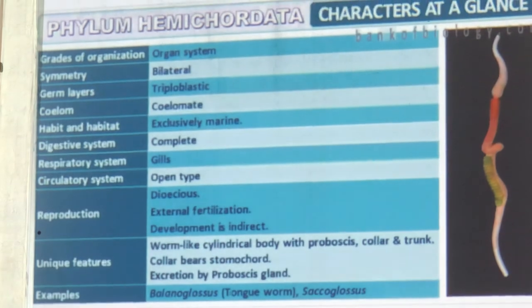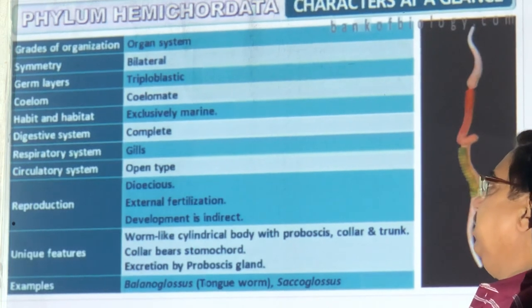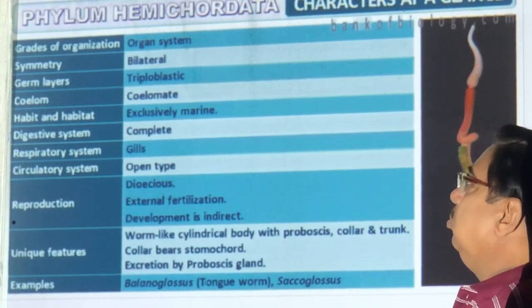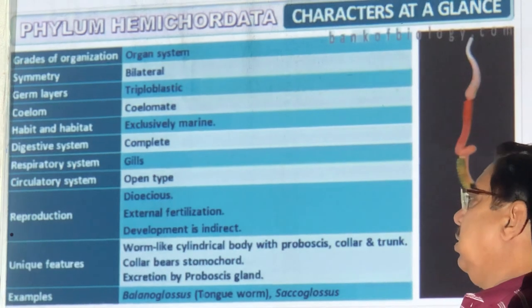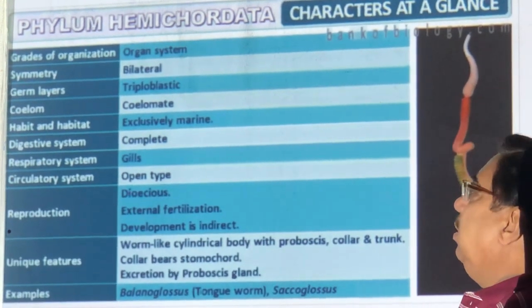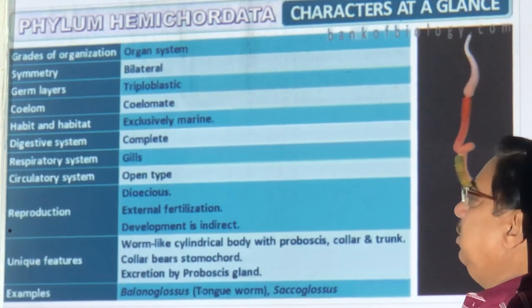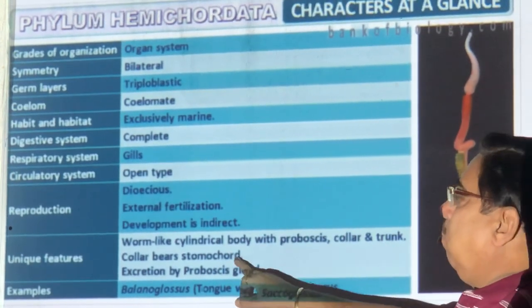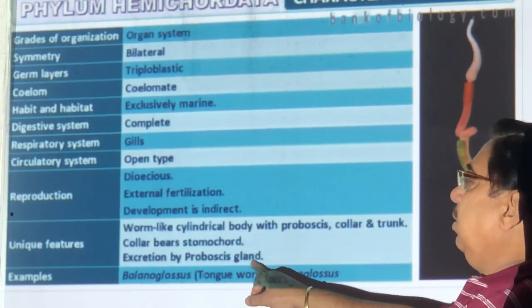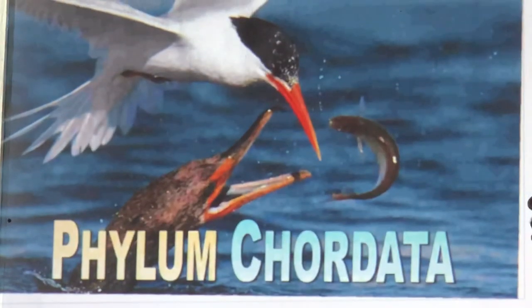Revision of Hemichordata: organ system, bilateral symmetry, three germ layers, true coelom, only in sea water. Full digestive system. Gills for respiration. Open circulatory system. Reproduction: dioecious, external fertilization, development by larvae (Tornaria larva). Unique: worm-like with proboscis, collar, and trunk; stomochord; proboscis gland for excretion. Examples: Balanoglossus (tongue worm) and Saccoglossus. This is where we stop for this session.